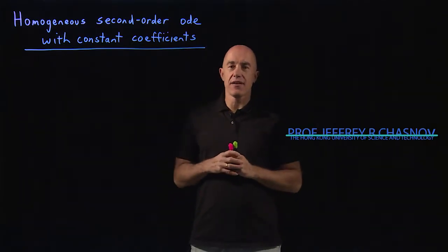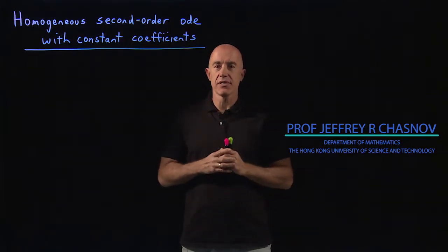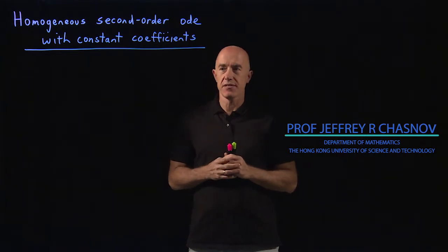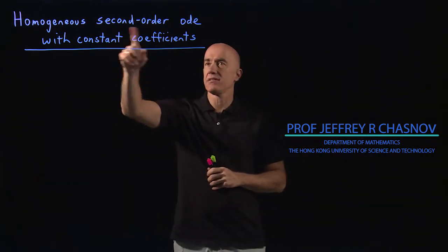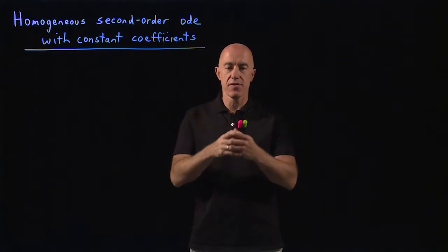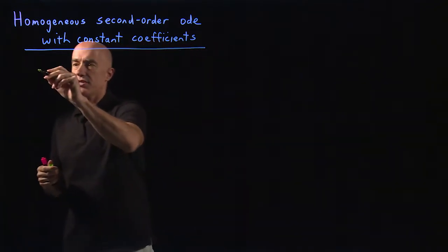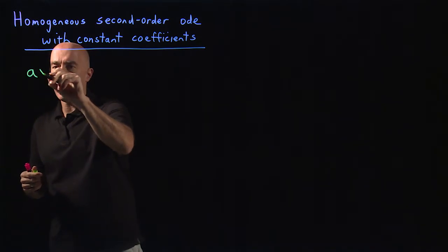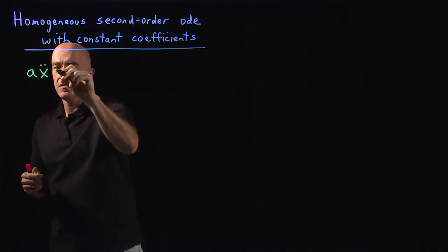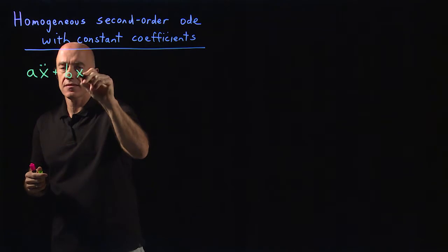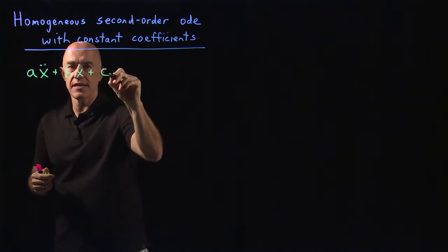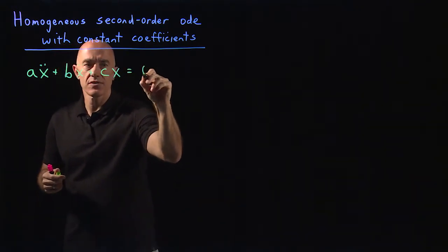Let's start working on a very fundamental equation in differential equations. That's the homogeneous second order ODE with constant coefficients. We can write the general equation as ax double dot plus bx dot plus cx equals zero.